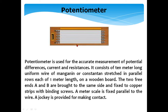This is the 10 meter long parallel wire connected on a wooden board. It consists of 10 meter long uniform manganin or constantan wire stretched in parallel rows, each of one meter length on a wooden board. The two free ends, A and B, are brought to the same side and fixed to copper strips with binding screws.